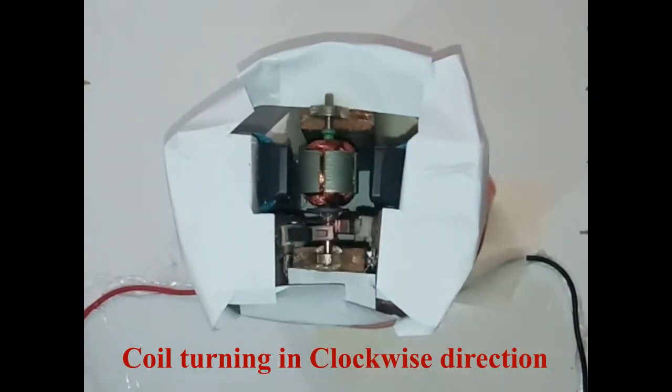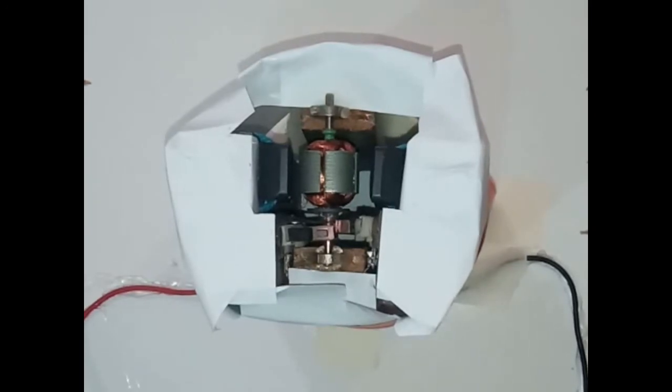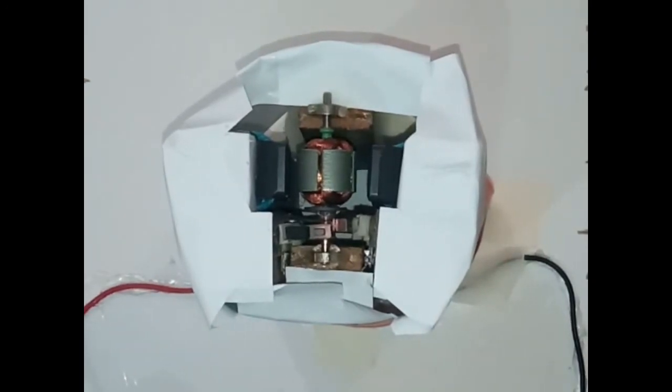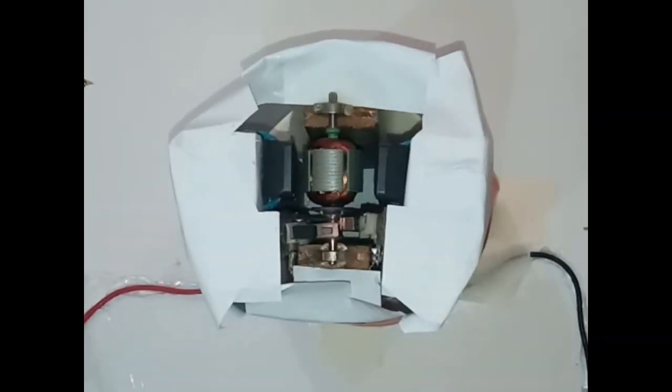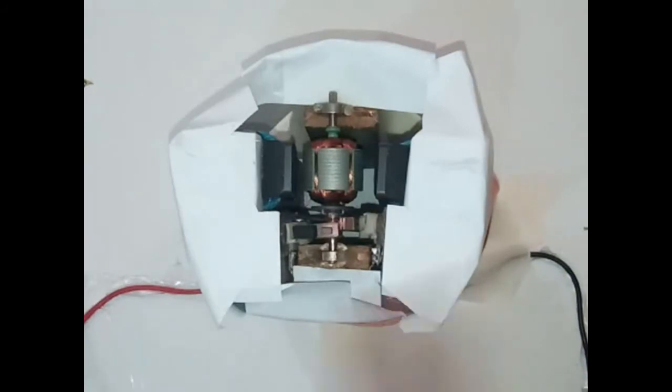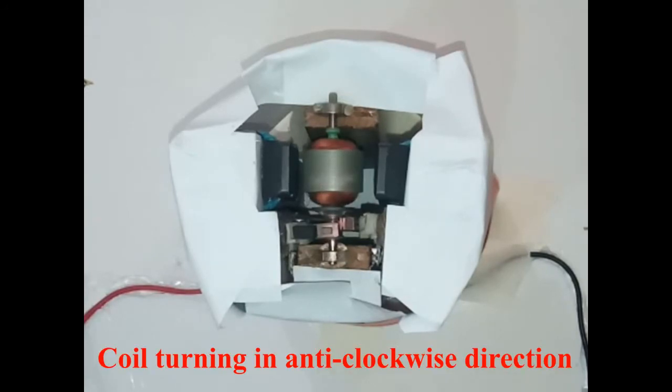Let me change the current direction and check the direction the coil moves. Now I have changed the current direction. First the coil was moving in clockwise direction. I have changed the current direction. Let's see in which direction the coil moves. So now it is moving in this way. That is anticlockwise direction.